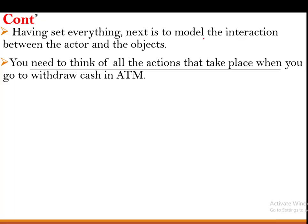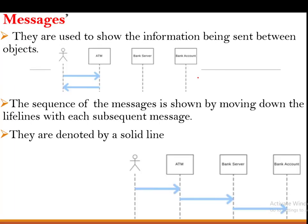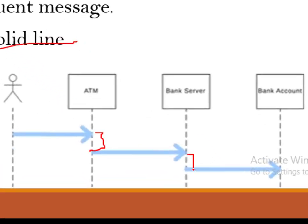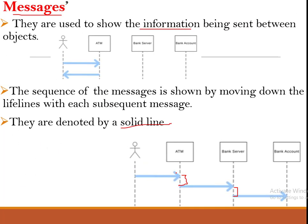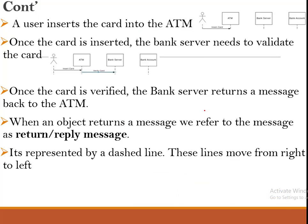To show how the interaction takes place during a withdrawal, we use a component called a message. The message is used to show the information that moves between objects, or between actors and an object. The sequence of messages is shown as we move downwards within the lifeline, indicated by a solid line with a time gap between one message and the next. The arrow denotes the direction of that particular message.